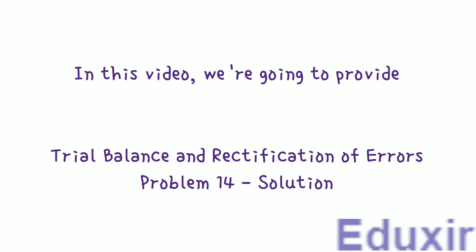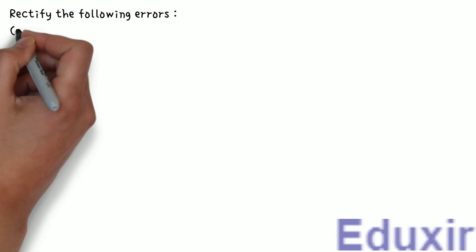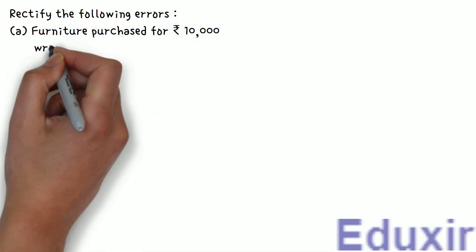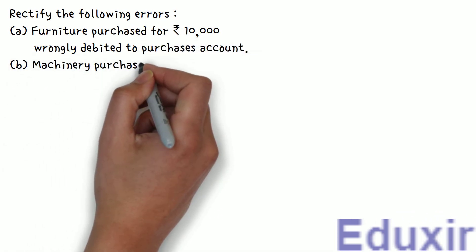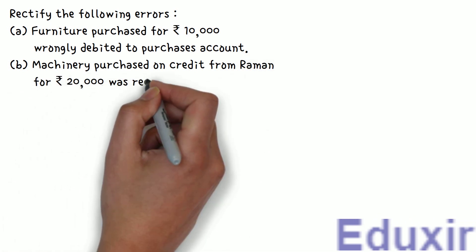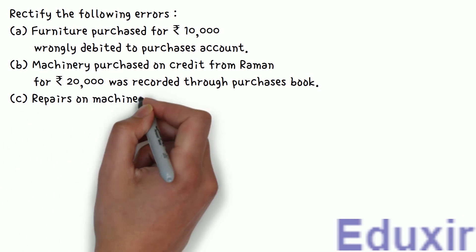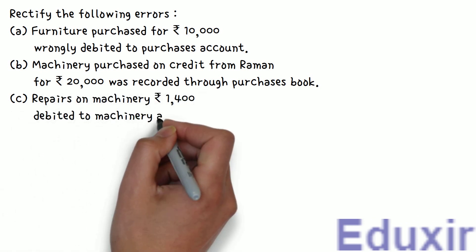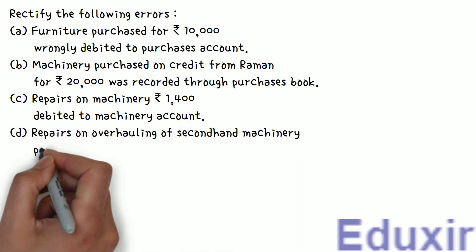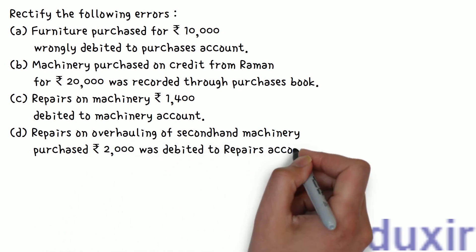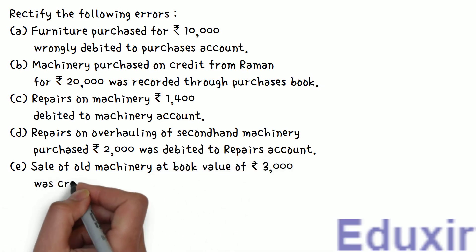The problem statement is as follows. Rectify the following errors. A: Furniture purchased for 10,000 rupees wrongly debited to Purchases Account. B: Machinery purchased on credit from Raman for 20,000 rupees was recorded through Purchases Book. C: Repairs on machinery 1,400 rupees debited to Machinery Account. D: Repairs on overhauling of secondhand machinery purchased 2,000 rupees was debited to Repairs Account. E: Sale of old machinery at book value of 3,000 rupees was credited to Sales Account.